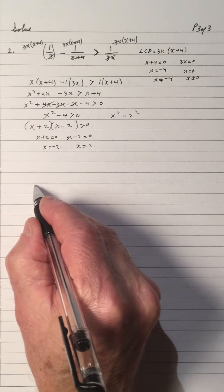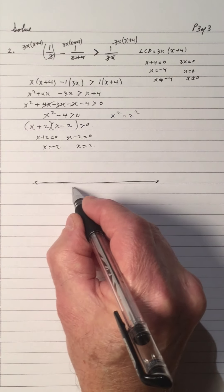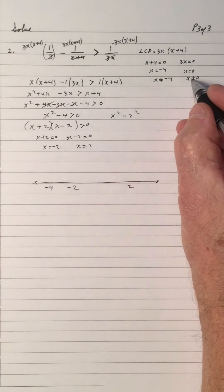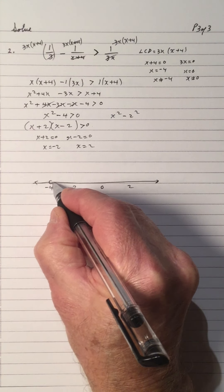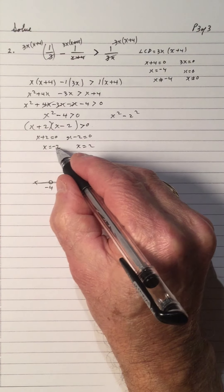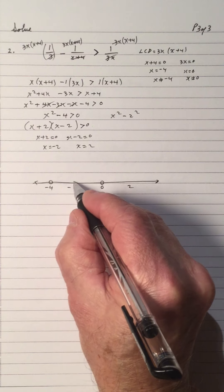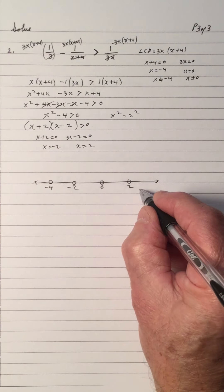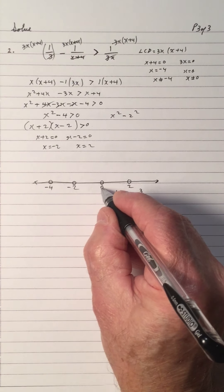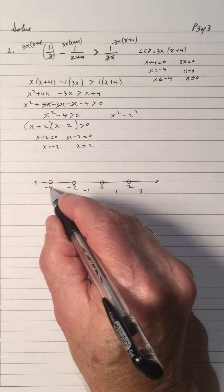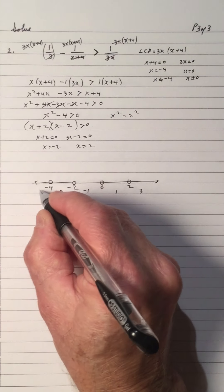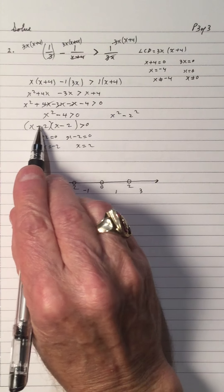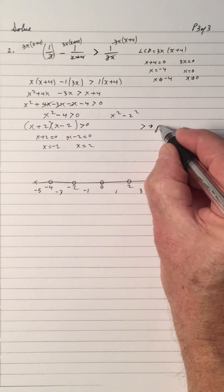On the number line we have negative 2 and 2. But we also have to mark x equals negative 4 and x equals 0 as hollow dots — those are excluded. The negative 2 and 2 are also hollow dots since the inequality is strictly greater than. So we have five regions to test: I'll try x equals 3, x equals 1 (between 0 and 2), x equals negative 1 (between negative 2 and 0), x equals negative 3 (between negative 4 and negative 2), and x equals negative 5. We're looking for positives since it's greater than.